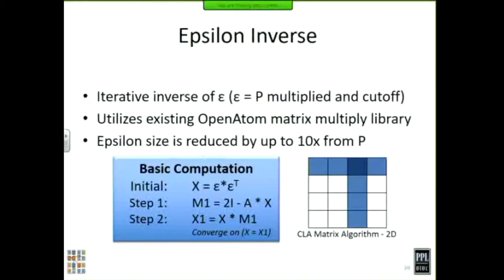The epsilon inverse step takes epsilon — which is just the scaled and cut-off version of P — and does an iterative inverse on it. This uses the existing OpenATOM matrix-matrix multiply library that has existed from the ground-state side for a while. We start with X and iterate doing multiplications until we get the inverse of epsilon. The epsilon size is reduced by around 10x from P because of the cutoff. One potential scaling problem: when running at very large scales, once we cut down to this smaller matrix, there's not a lot of work left to spread across nodes.